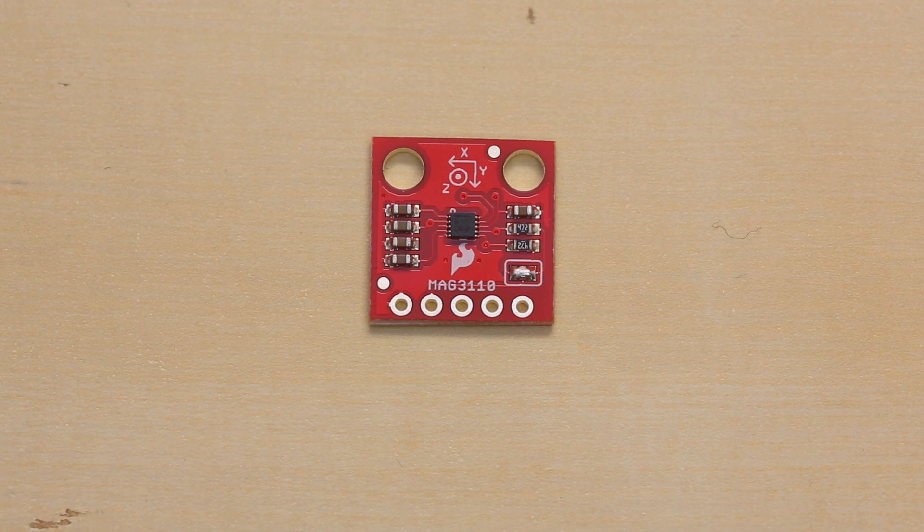We now have a jumper to enable or disable the pull-up resistors. That was a common comment that everyone wanted. We also fixed the footprint and did all the other stuff to make it easier for our production department to make.